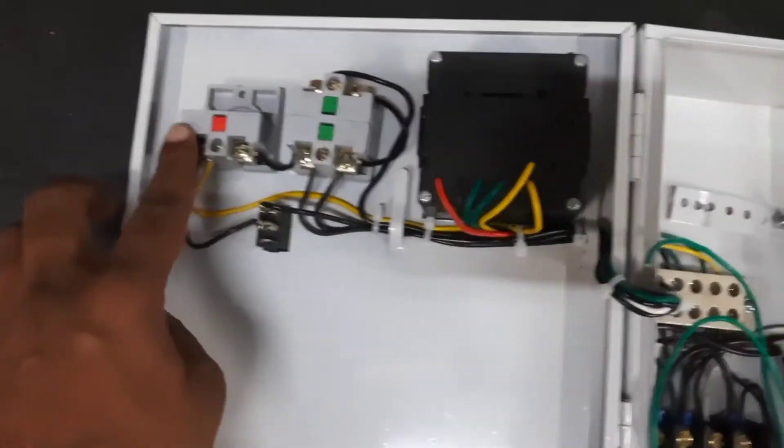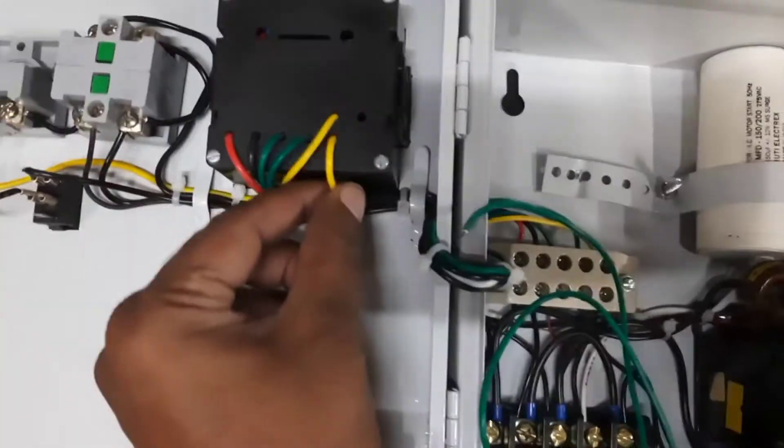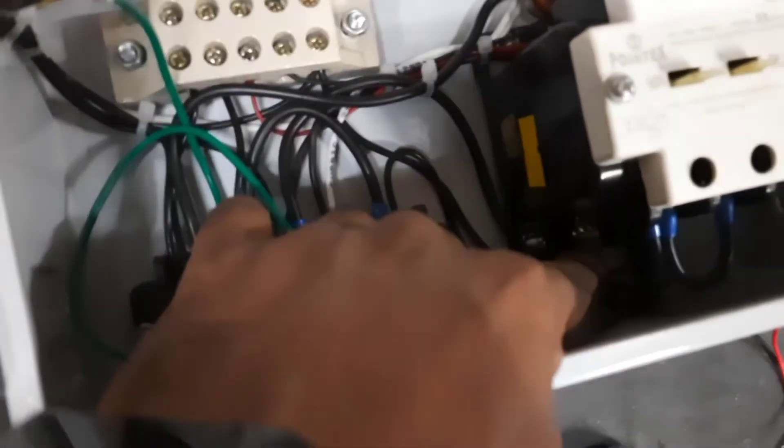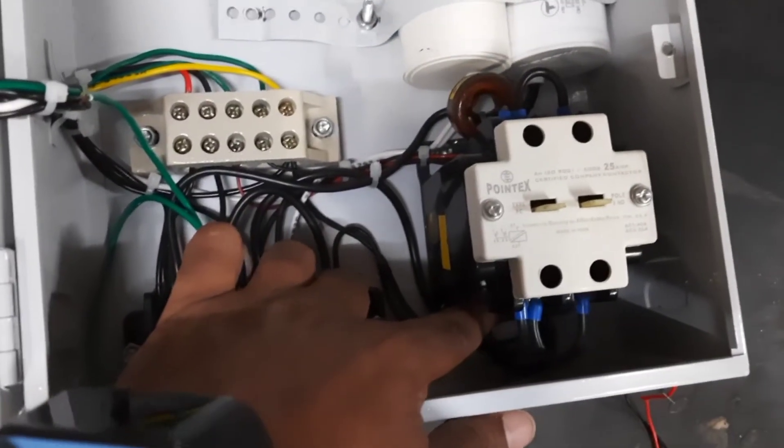Another wire will be provided to the contactor coil. The contactor coil will get the phase through this meter.